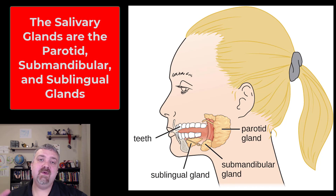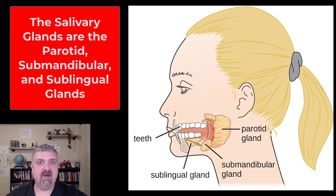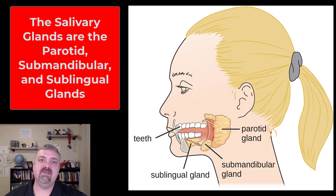Hey everybody, Dr. O here. In this video, we're going to talk about the salivary glands and saliva. Here you see a picture that shows the three main salivary glands. They're paired: there are two parotid glands, two submandibular glands, and two sublingual glands.